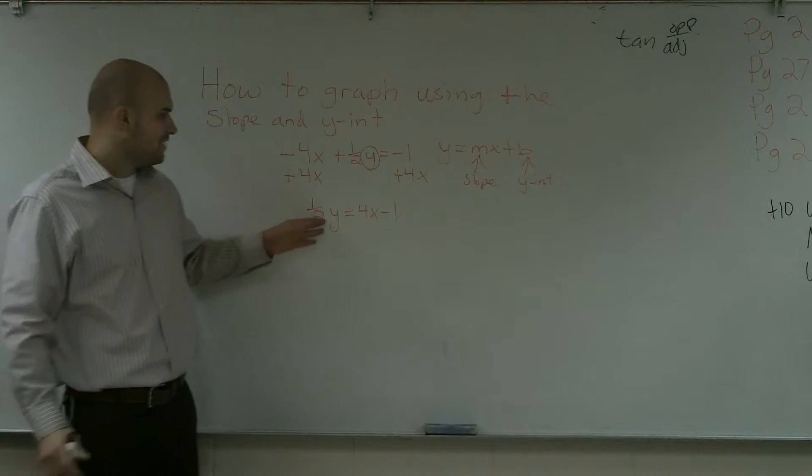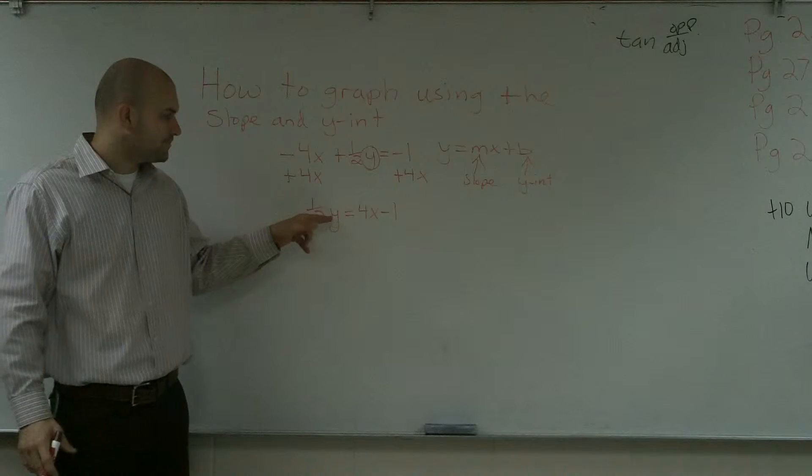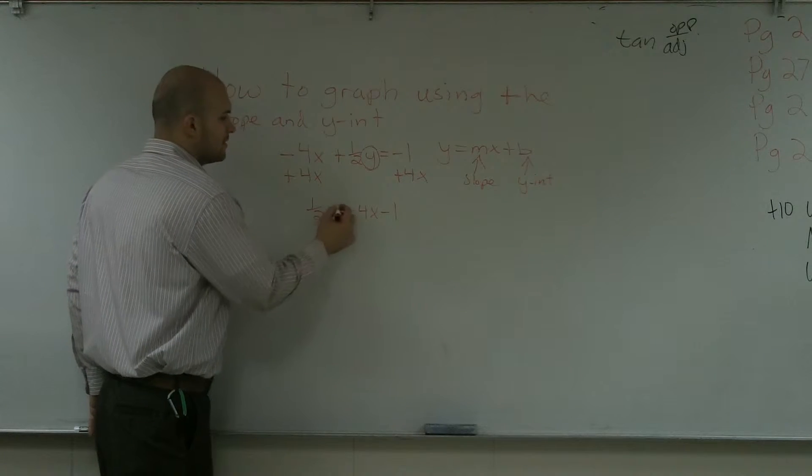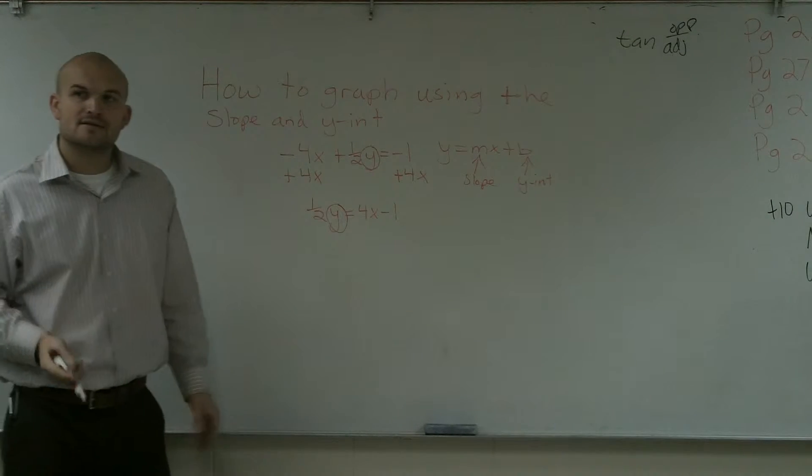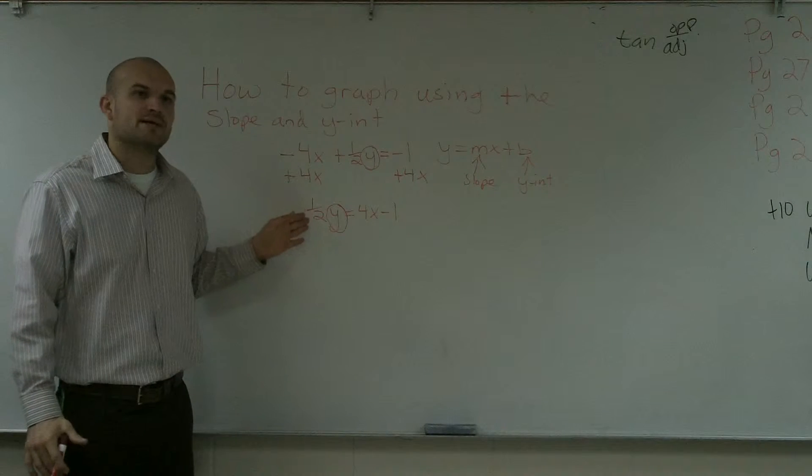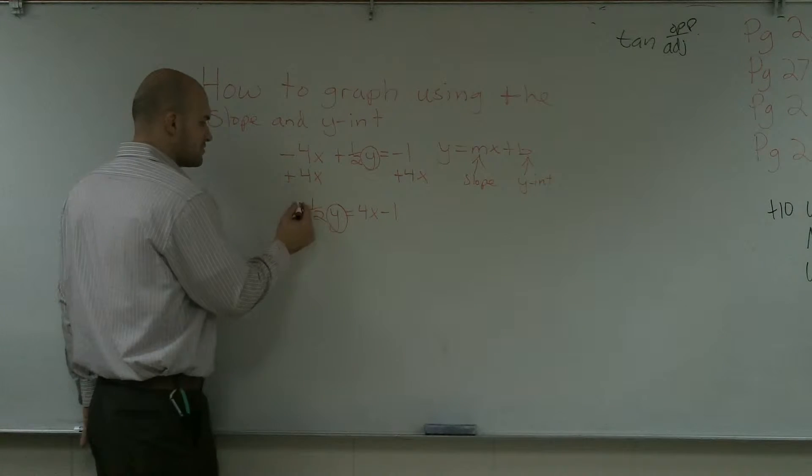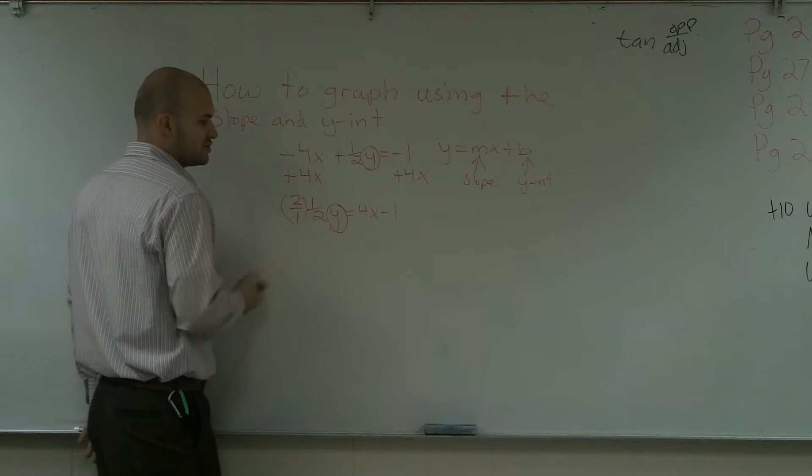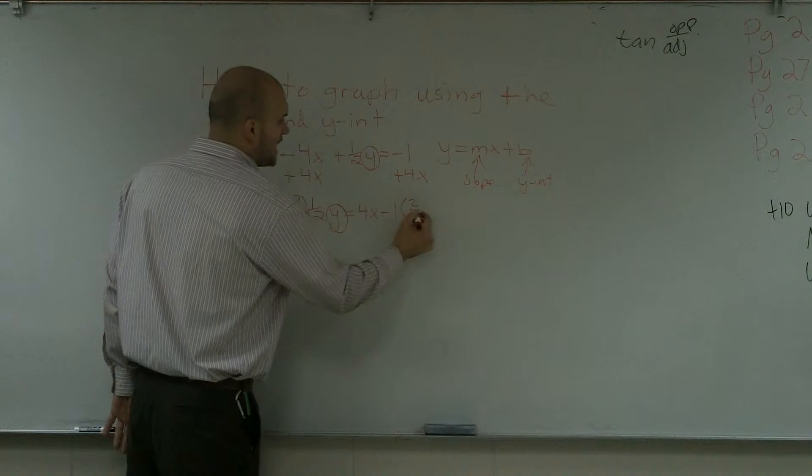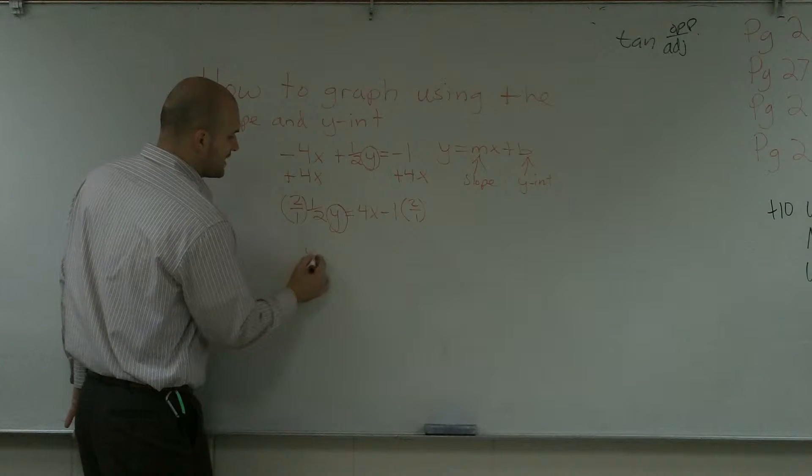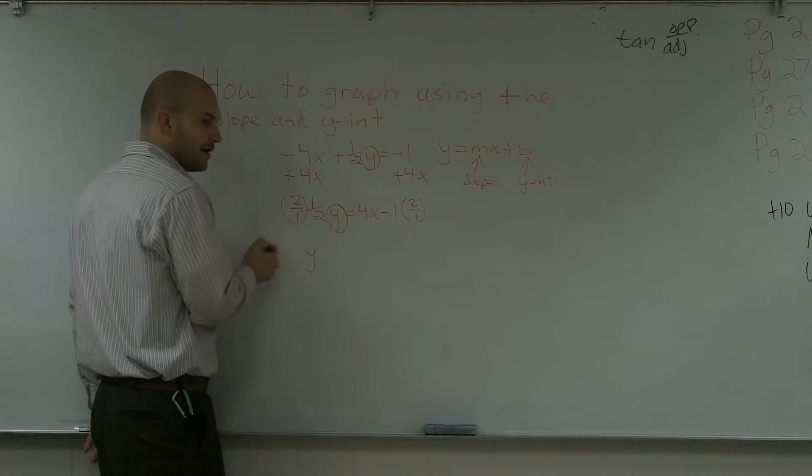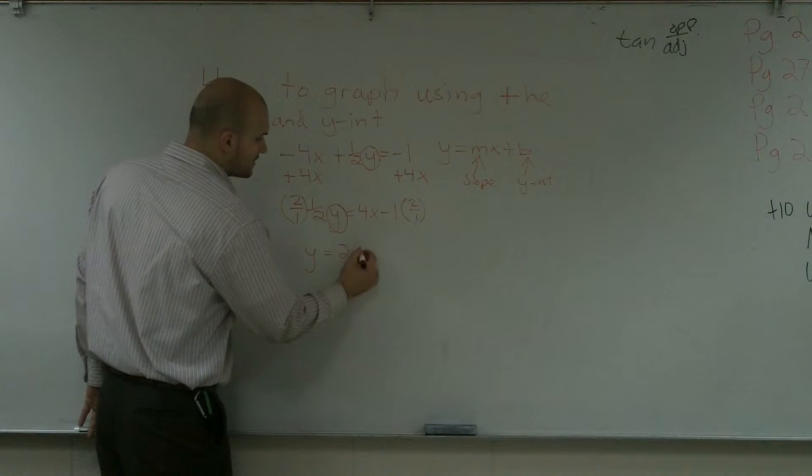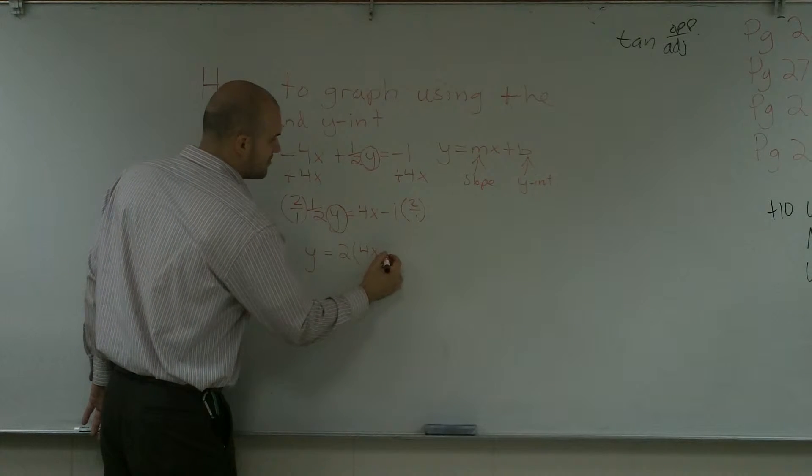Now my variable is being multiplied by 1 half. So to undo that, remember how we undo fractions is we can multiply by the reciprocal. So multiply by 2 over 1, which we know is the same thing as 2. And you multiply by 2 over 1 on both sides. So therefore, I get y. That's going to cancel out to 1. 1 times y is y. Y equals 2 times 4x minus 1.